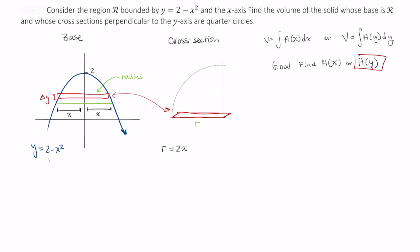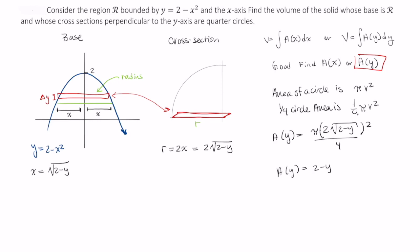So let's go ahead and start by rewriting this as a function of y. Let's begin by rewriting the equation that bounds our region in terms of y. So this is x equals the square root of 2 minus y. This means our radius is equal to 2 times the square root of 2 minus y. So the area of a circle is given by pi r squared. But I want a quarter circle, so I want one-fourth pi r squared. That means my function representing the area is pi times 2 times the square root of 2 minus y, this quantity squared here divided by 4. This simplifies to 2 minus y times pi.